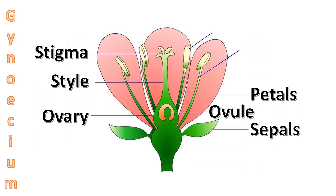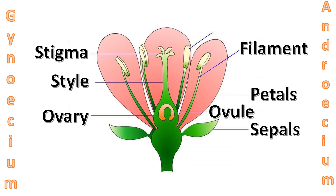The fourth important part is the male reproductive part called the androecium. The androecium contains two main parts: the filament, which attaches the anther to the flower, and the anther, which contains the male reproductive gametes called pollen. I hope the structure of the flower is now very clear to you all. Thank you for watching this video, and happy learning!